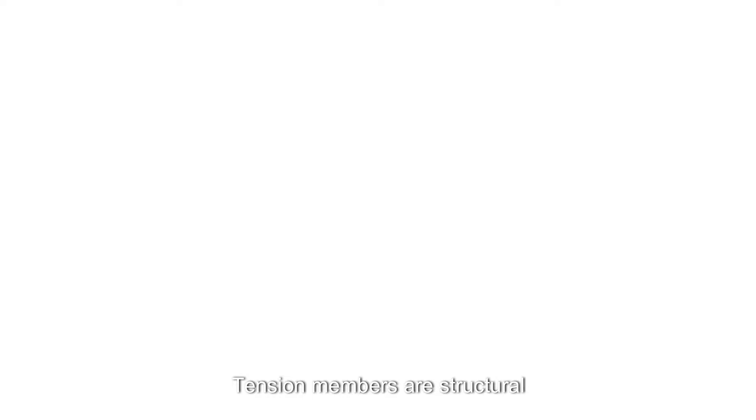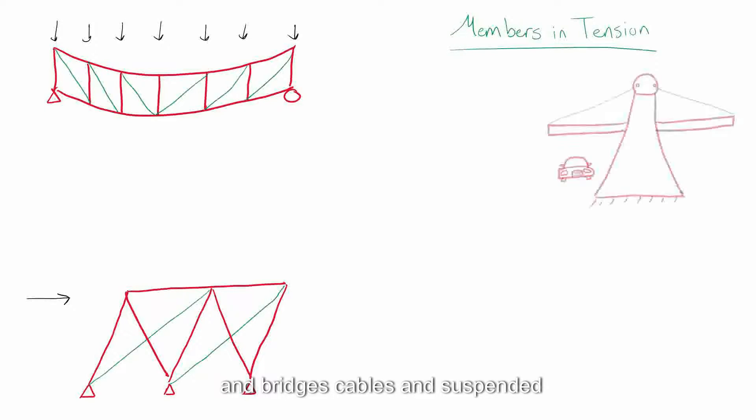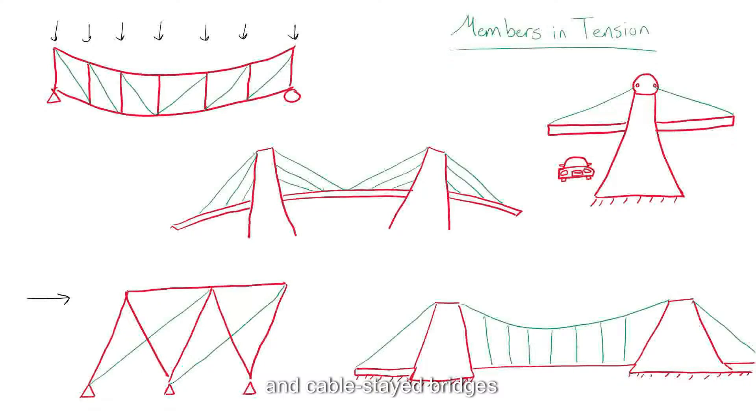Tension members are structural elements that are subjected to axial tensile forces. They are used in various types of structures and include truss members, bracing for buildings and bridges, cables in suspended roof systems, and cables in suspension and cable-stayed bridges.